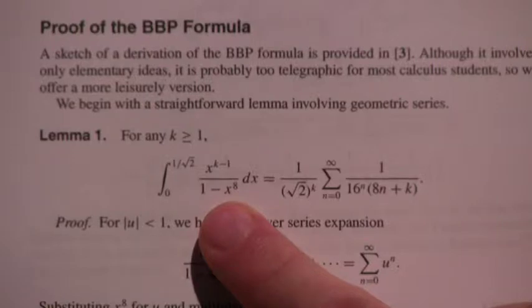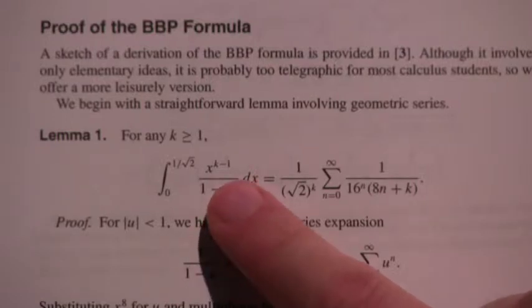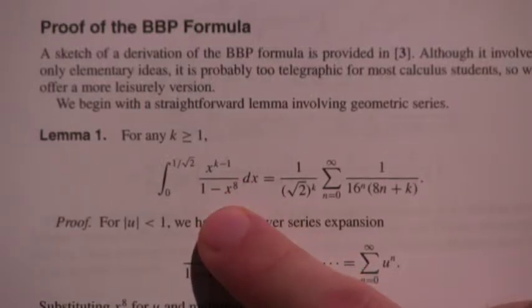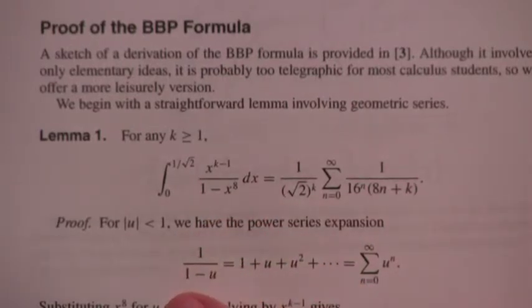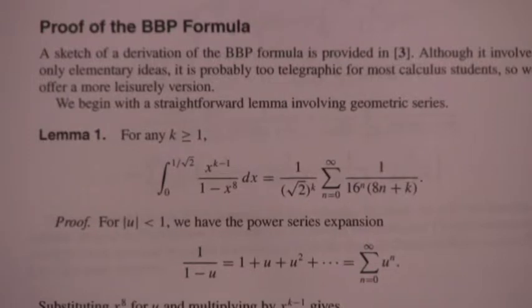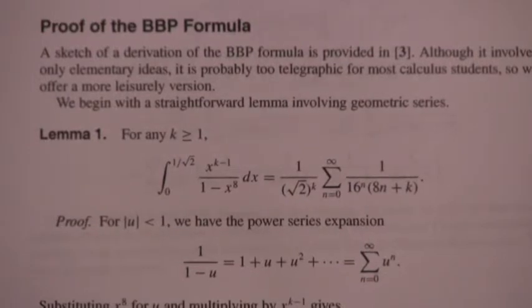But by exactly the same technique of expanding this 1 over 1 minus x to the 8th as an infinite series, and what would that infinite series be, 1 over 1 minus x to the 8th? So ignore the term on the top for a second. 1 over 1 minus x to the 8th would be what? So it's 1 plus x to the 8th plus x to the 16th plus x to the 24th. Okay. That's a good job. So that proof happens here down below.